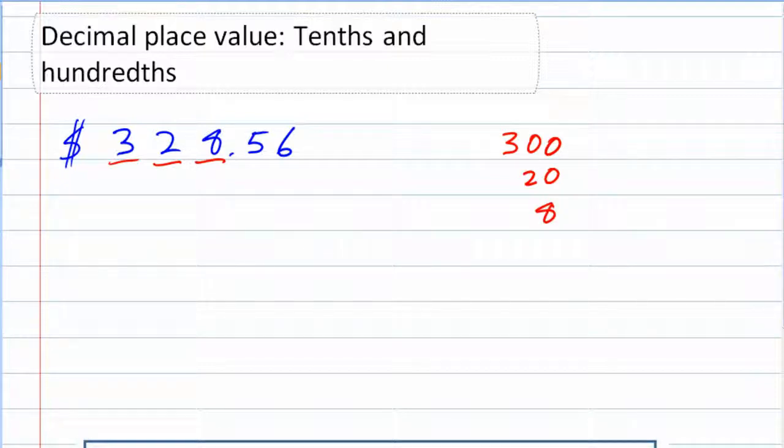And maybe five dimes, 50 cents, and then six pennies. And between all of these numbers, I would have my $328.56.